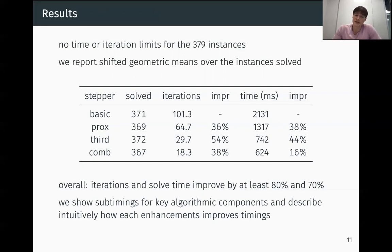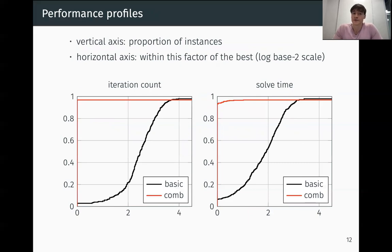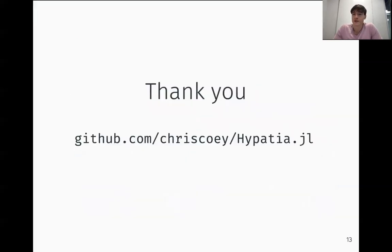In the paper, we actually go into a lot more detail. We look at particular sub timings for algorithmic components, and we're able to sort of understand intuitively how these enhancements are improving the iterations and timings. Here's some performance profiles for the iteration counts and solve times for basic, which is like Skajaa-Ye, and combined, which is the final stepper with all of the enhancements. We can see that the iteration count improves on every instance that solves, and the solve time improves on nearly every instance. And the size of these improvements are quite substantial.